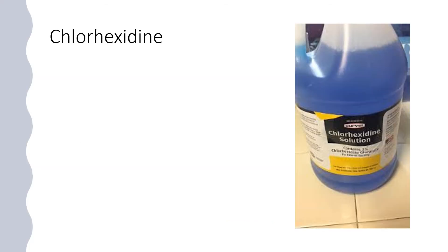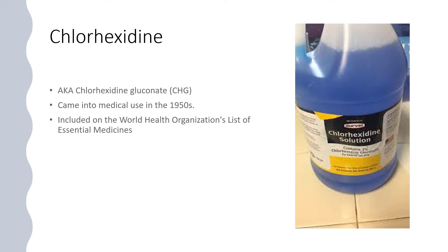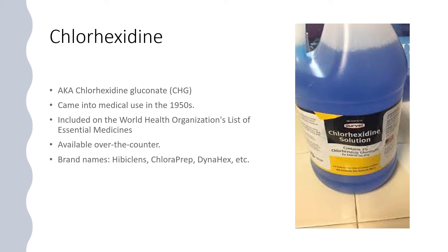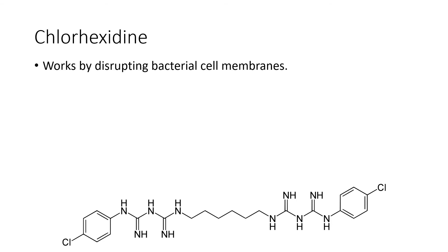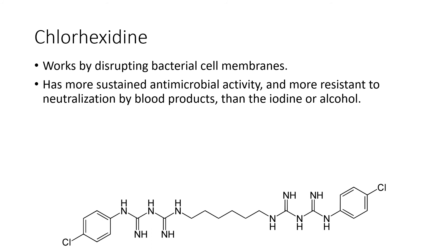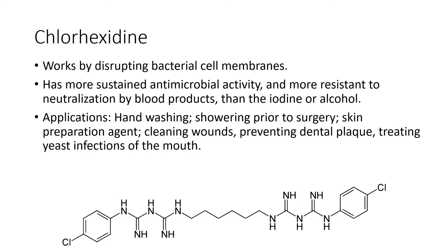The next antiseptic is chlorhexidine, also known as chlorhexidine gluconate, which came into medical use in the 1950s. It is also included on the WHO's list of essential medicines and is marketed under brand names such as Hibiclens, ChloraPrep, and Dynahex. Chlorhexidine works by disrupting bacterial cell membranes and has more sustained antimicrobial activity and greater resistance to neutralization by blood products than iodine or alcohol. It is used for hand washing, pre-surgical showering, skin preparation for surgery, wound cleaning, preventing dental plaque, and treating yeast infections in the mouth.